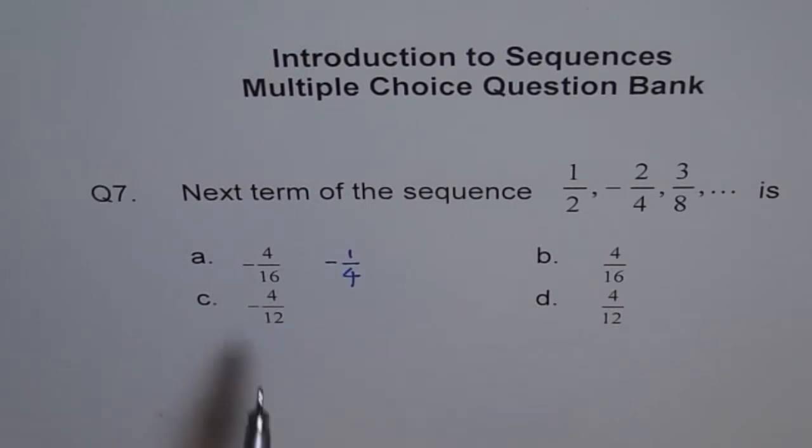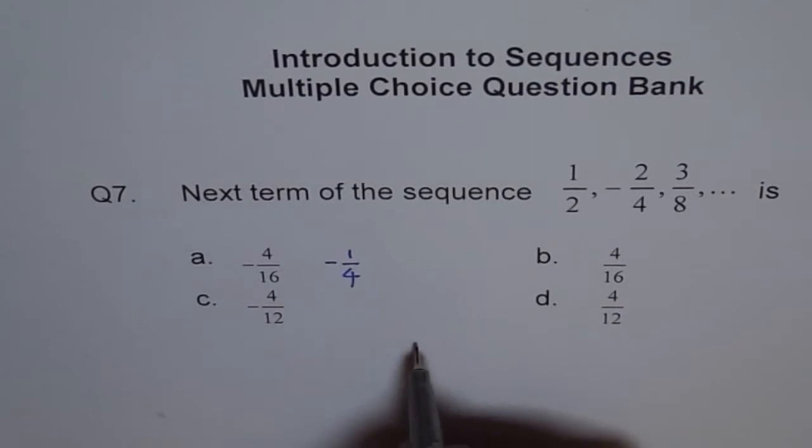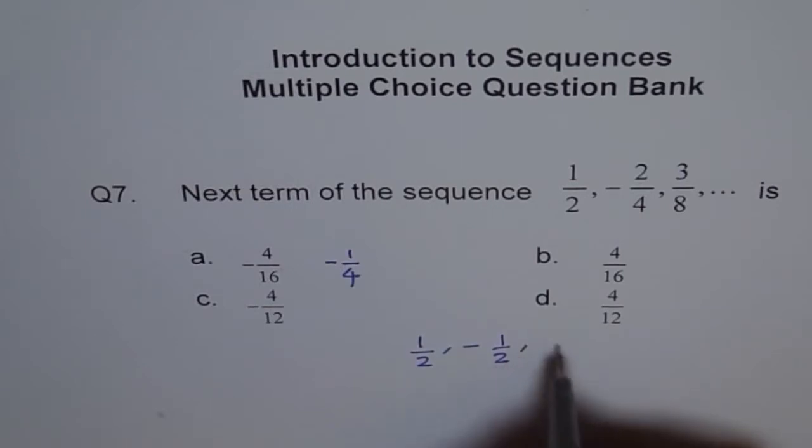And, we could have the same sequence written like this also. We could have written this as 1 over 2, minus 1 over 2, 3 over 8, and this.